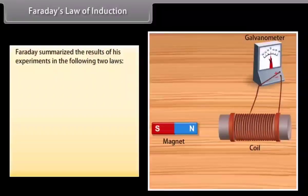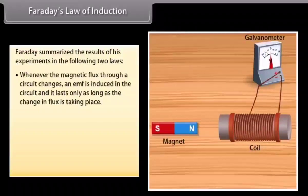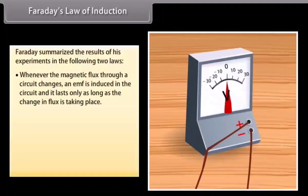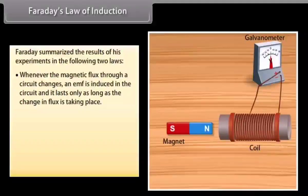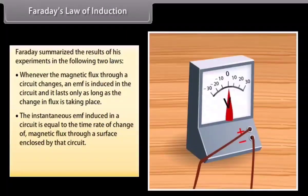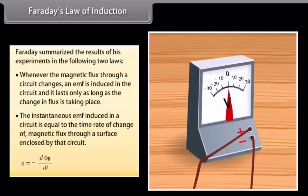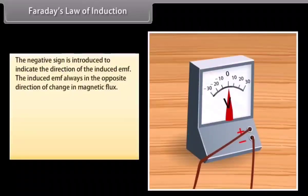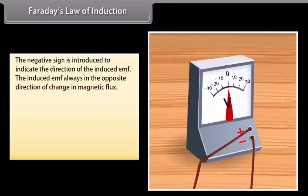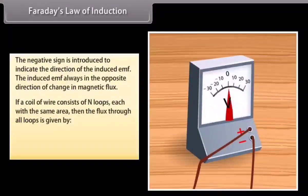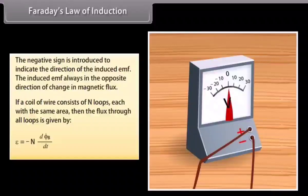Faraday's Law of Induction: Faraday summarized the results of his experiments in two laws. Whenever the magnetic flux through a circuit changes, an EMF is induced in the circuit and it lasts only as long as the change in flux is taking place. The instantaneous EMF induced in a circuit equals the time rate of change of magnetic flux through a surface enclosed by that circuit: E equals minus d(Phi_B)/dt. The negative sign indicates the direction of the induced EMF, which always opposes the change in magnetic flux. If a coil consists of N loops, the flux through all loops is given by minus N·d(Phi_B)/dt.